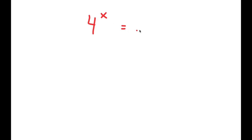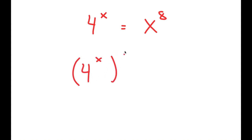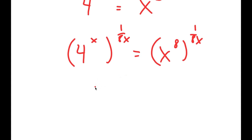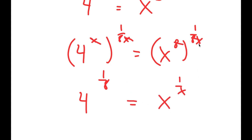In this video, I'm going to solve the equation 4 to the power of x is equal to x to the power of 8. To solve this, I'm going to first start by taking the power of 1 over 8x on both sides. From here, I get 4 to the power of 1 over 8, because those terms cancel out, is equal to x to the power of 1 over x, because the two 8s cancel out.